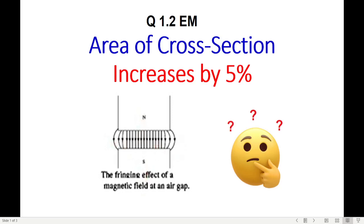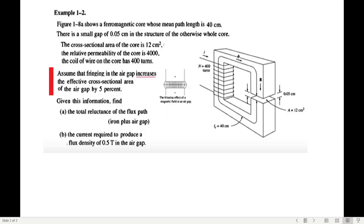In question 1.2 of electrical machines, the area of cross section increases by 5% and how to calculate that has puzzled some students who have forgotten their basics. So let me try to explain the question and then the answer.